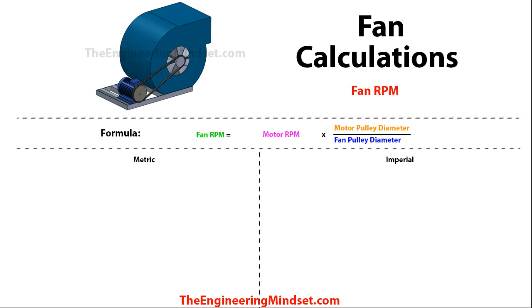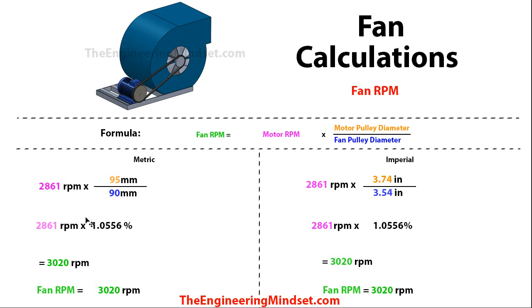So then we can look at what the fan RPM needs to be in order to achieve our design criteria. The formula is: the fan RPM is equal to the motor RPM multiplied by the motor pulley diameter divided by the fan pulley diameter. We should have calculated or taken these figures from the manufacturer. Dropping the numbers in gives us a ratio from the division of the pulley diameters, and multiplying these together brings us to 3,020 RPM on both metric and imperial — that is the speed the fan needs to rotate at to achieve the design flow rate.